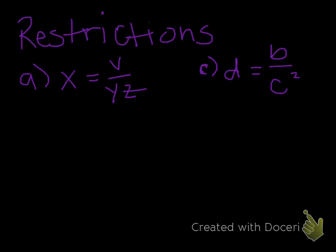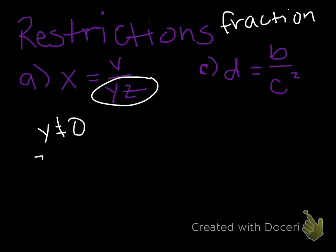Talking about restrictions, the only time we'll have a restriction is if you have a fraction. So we know that we can never divide by zero. That's just a property. If you divide by zero, you get undefined. So here the restriction is y and z. So we would say y cannot equal zero and z cannot equal zero.